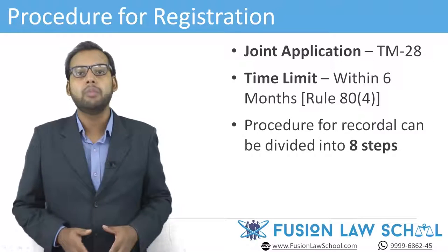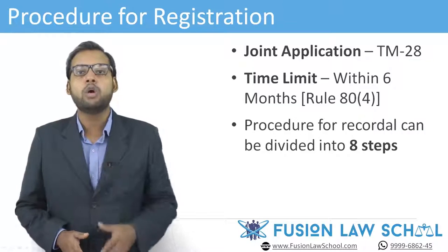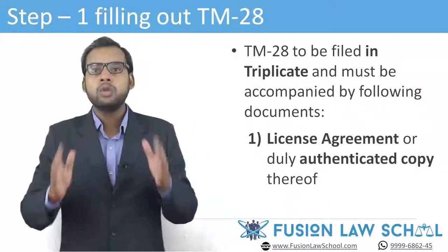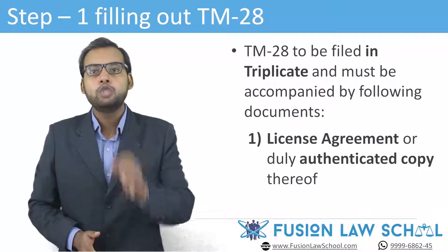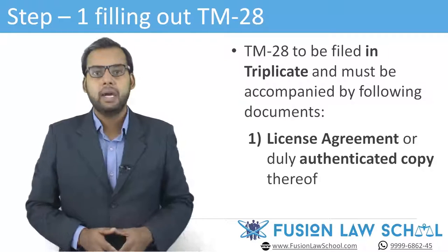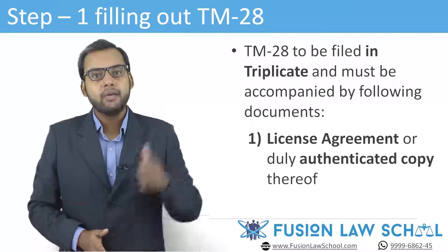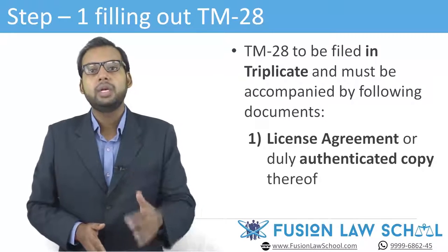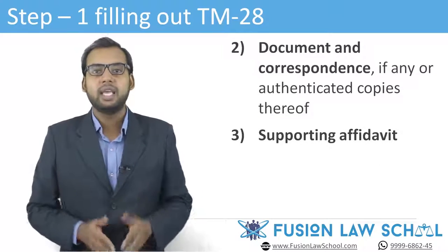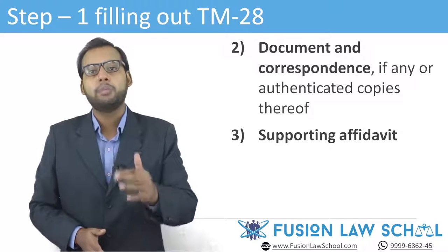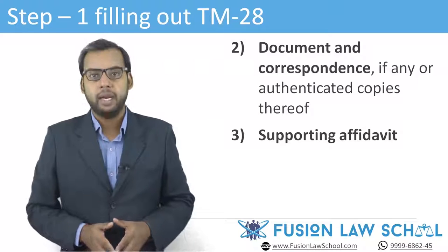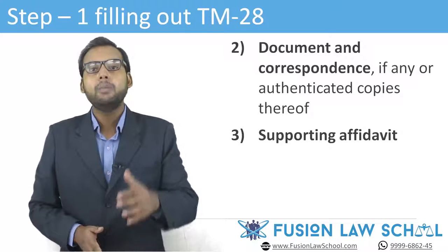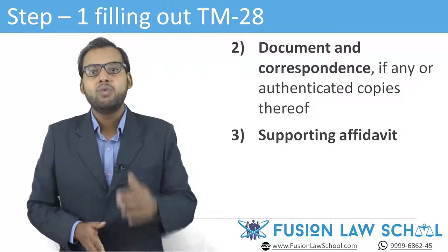Under the earlier law, the period was 18 months from the date of the agreement. The procedure for recordal of a registered user can be divided into 8 steps. The first step is filling out TM-28. TM-28 should be filed in duplicate and must be accompanied by the following documents: first, an agreement in writing between the registered proprietor and the proposed user, or a duly authenticated copy thereof, with respect to the permitted use of the trademark; second, documents and correspondence, if any, mentioned in the agreement or authenticated copies thereof; and third, a supporting affidavit of the registered proprietor or some authorized person testifying to the genuineness of the documents accompanying the application.